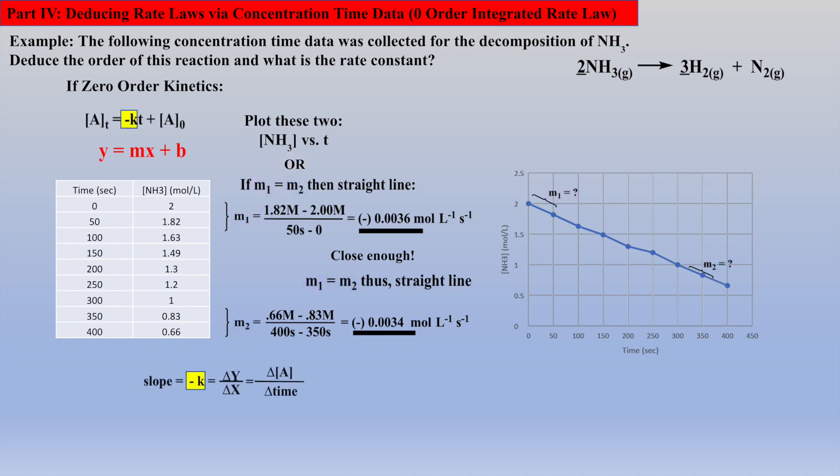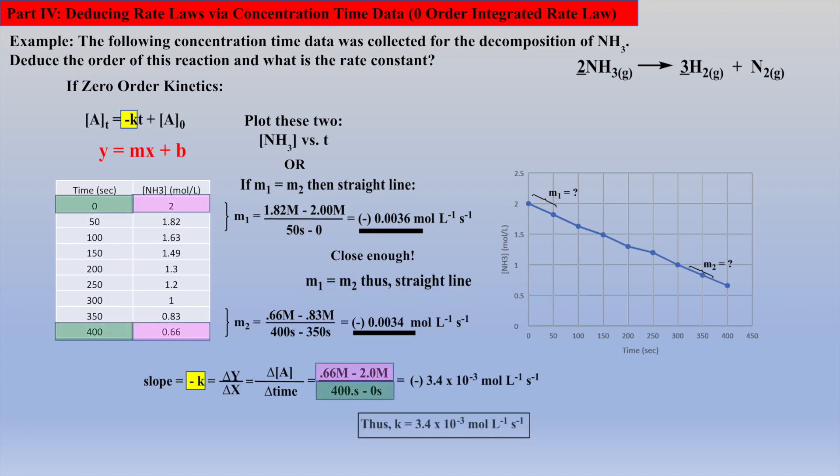Calculating the slope using the first and last data points affords the rate constant as shown. Note that the negative of the slope affords a positive rate constant.